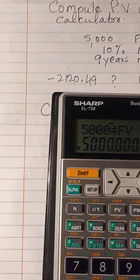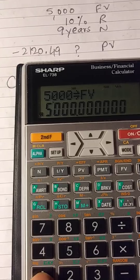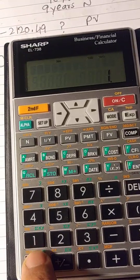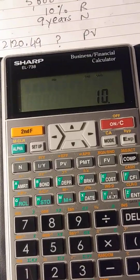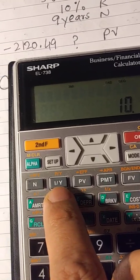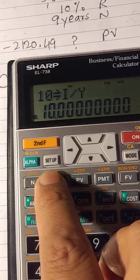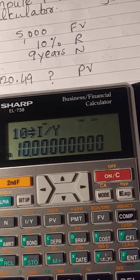Then we have 10% rate, so press 10. The rate button is, have a look, 1 over Y. Then we have time, 9 years.